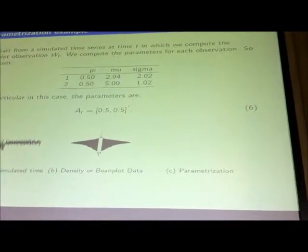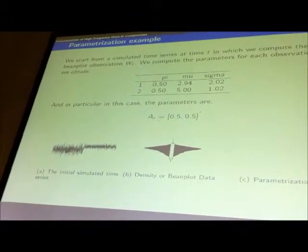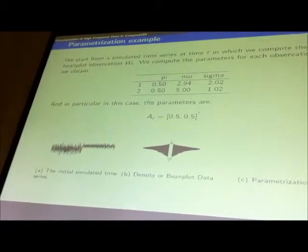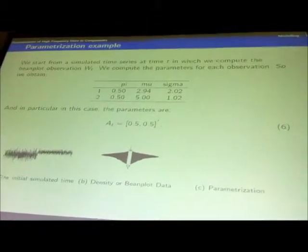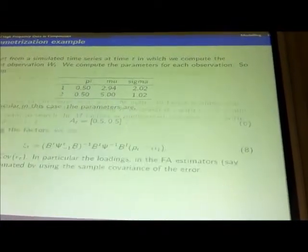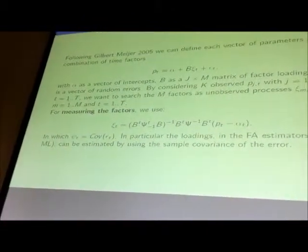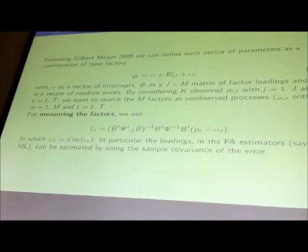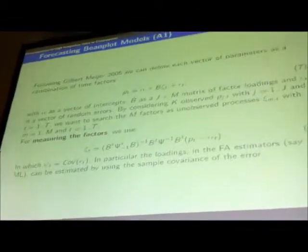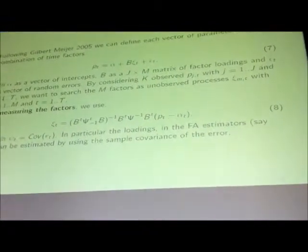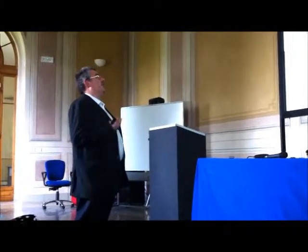Using an example with a series showing a clear structural change, the bin-plot captures this structural change through parametrization of the finite mixture, showing density features that are very relevant for trading operations. We find two different components. We extract the parameters and define each parameter vector as a combination of time factors. We then apply factorial time series methods to obtain a single temporal measure representing the dynamics of the bin-plot over time. For measuring the factors we use time series factor analysis to extract the relevant information from the bin-plot.